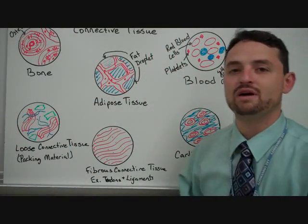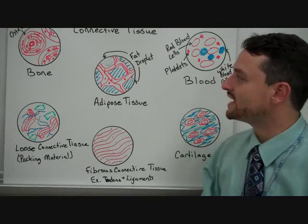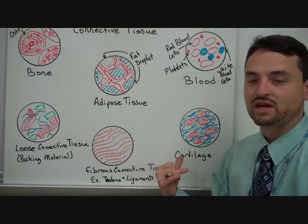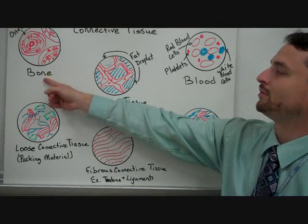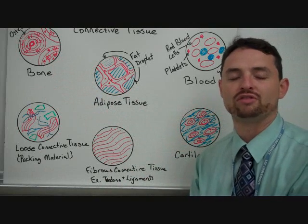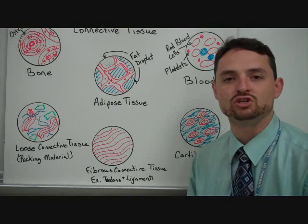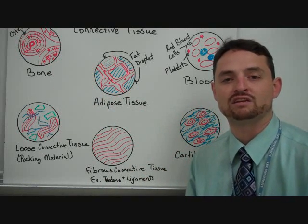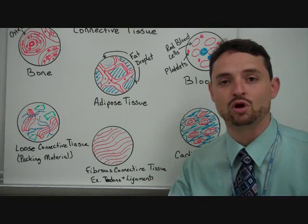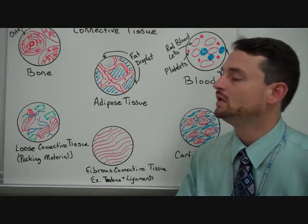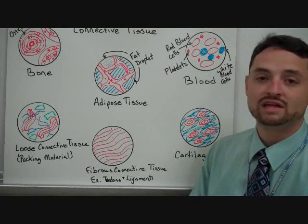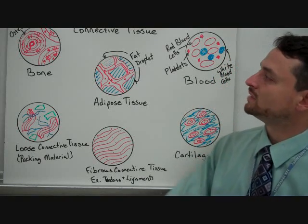The next type of tissue is connective tissue. I've got six different types here as well. Up here we've got bone. Many people don't think of bone tissue as connective, but if you think about it, it does connect up your whole entire body with that skeletal system.